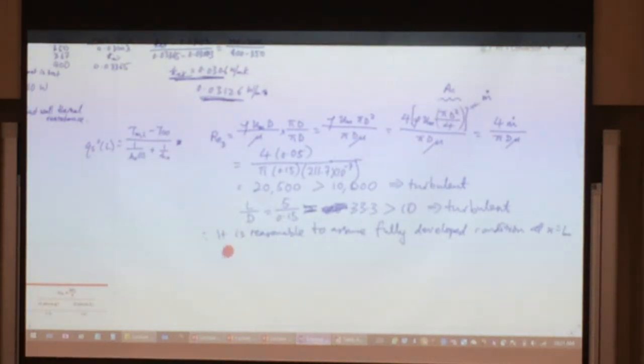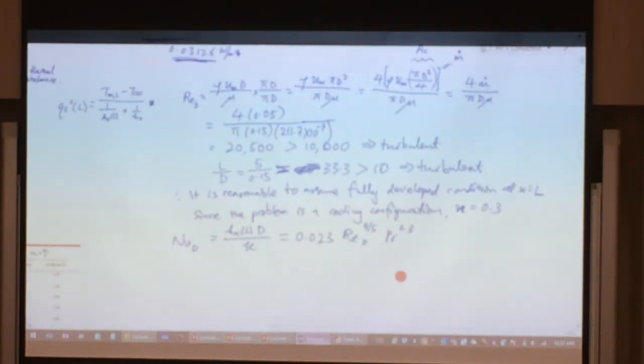Since the problem is a cooling problem, it's a cooling configuration. What I mean is your n would be equal to 0.3. You can see where I'm getting at already. I'm getting at this Nusselt number expression. Nu_D is equal to H_xL times D divided by K. This one must be equal to my turbulent equation. This was provided to you just now in the slides before. 0.023 Reynolds number to the power of 0.8, Prandtl number 0.3. That's for the turbulent, fully developed turbulent flow.